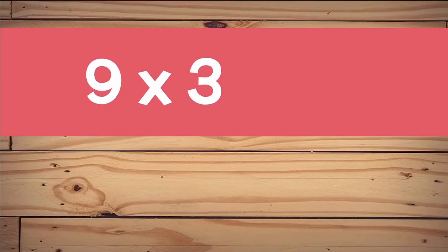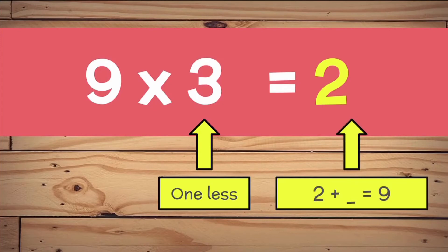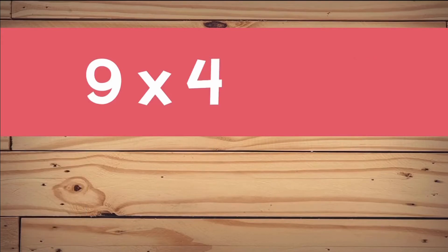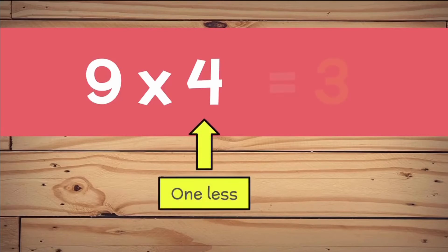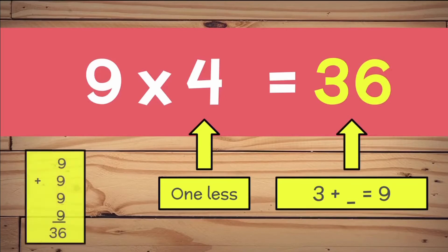9 times 3. 3 take away 1 is 2. And 2 plus what equals 9? 2 plus 7 equals 9. Let's check — 9 plus 9 plus 9 equals 27. 9 times 4. 4 take away 1 equals 3. 3 plus what equals 9? 3 plus 6 equals 9. And 9 plus 9 plus 9 plus 9 equals 36.